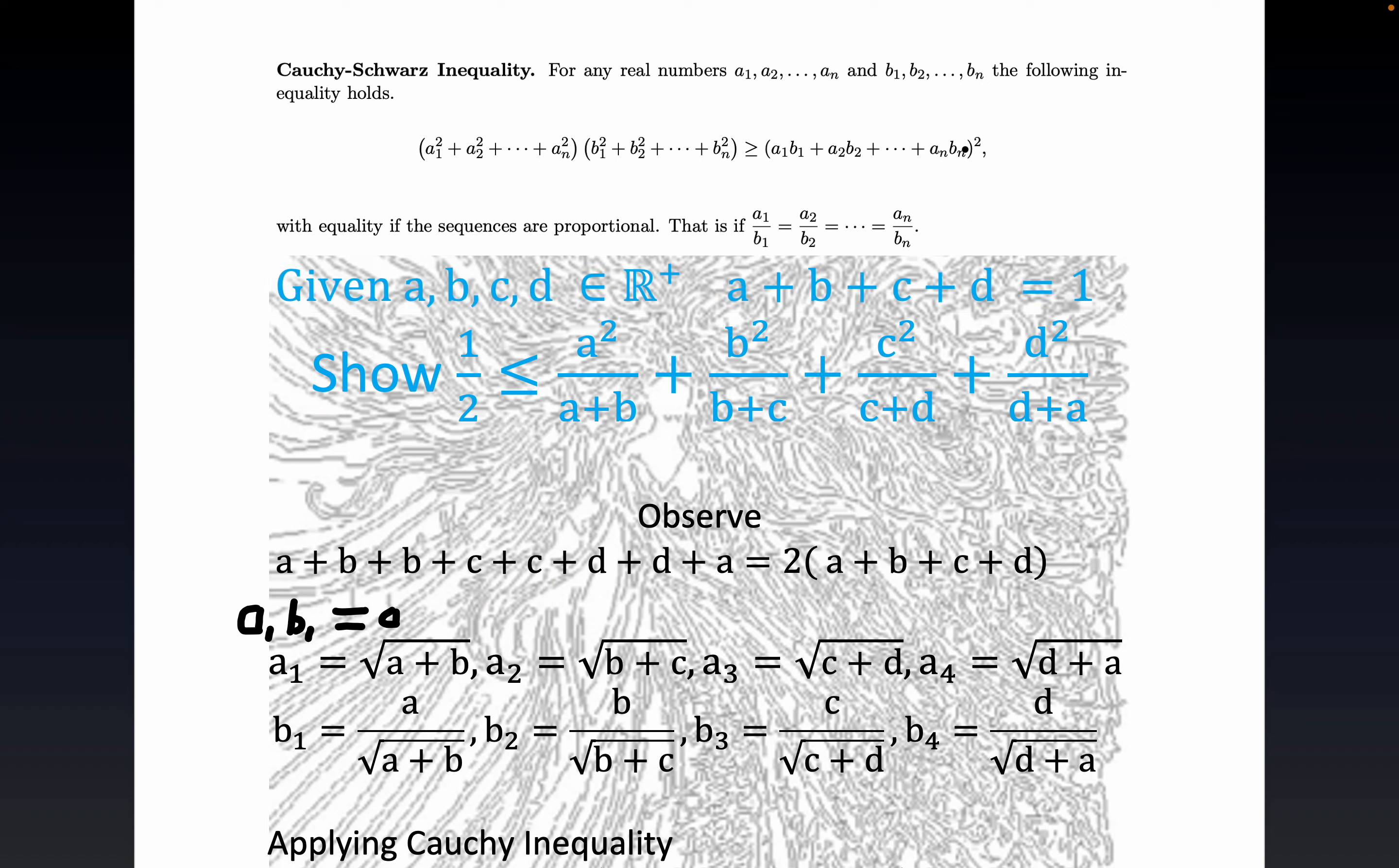Now also notice that our inequality wants us to show that one half is a lower bound for this cyclical looking sum of quotients, and you can see how a, a+b, b, b+c, c, c+d, you know, it's a cyclical sort of structure.